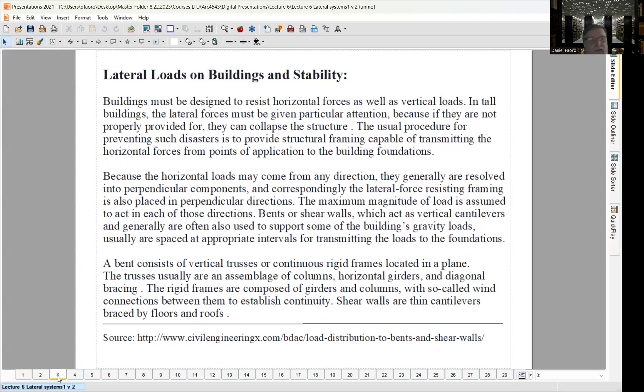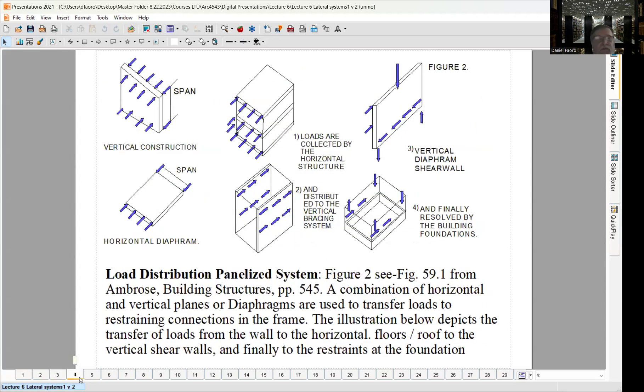Bents or shear walls act as vertical cantilevers. They're used to support building's gravity loads sometimes, but also can resist lateral loads. A bent consists of vertical trusses or continuous rigid frames. They can be part of an assumption of columns, horizontal girders, and diagonal bracing. And rigid frames are composed of girders and columns, and so-called wind connections between them will establish continuity. And again, a shear wall is basically treated as a thin vertical cantilever. So taking a look at these shear wall-type systems, starting on the left-hand side, we have a vertical wall system. And it's got what we call vertical studs back in Lecture 4, spanning between floor to floor. And the wind is acting along this wall. This is the windward side wall. And a portion of that windward force on the wall goes up to, let's say, the second floor. And the bottom will go down, let's say, in this case, to the foundation.